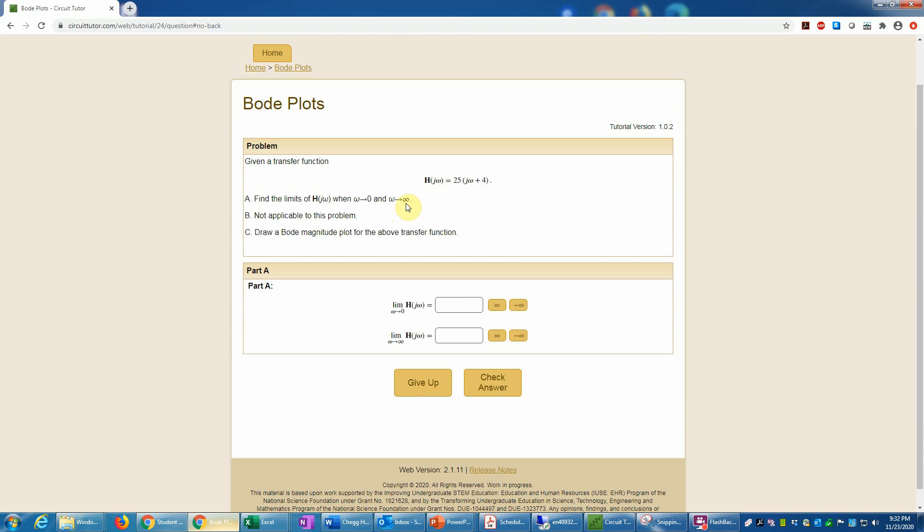In this case that's fairly straightforward. When omega goes to zero we have 25 times 4 or 100, so I'll enter that here. When omega goes to infinity, this will go to positive infinity. To enter infinity I simply click the infinity button here, or likewise for negative infinity I would click over here. You can do that in either of these two limits.